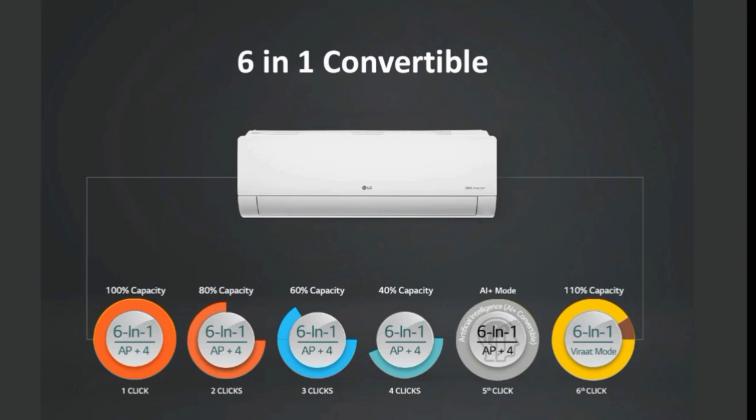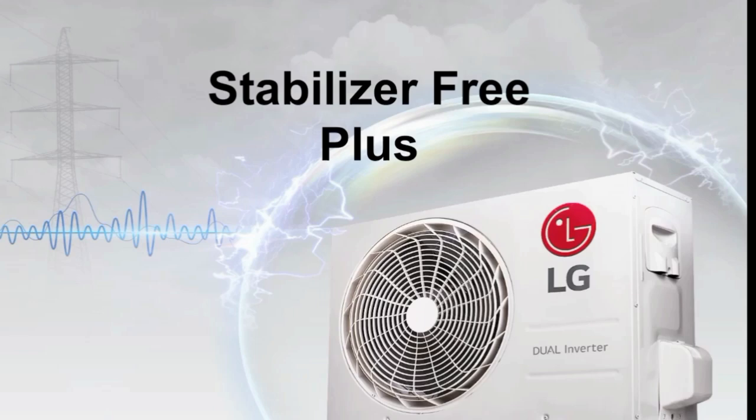If you press VRAT mode, you will have high-key VRAT mode. If you press VRAT mode, you will get 6 extra cooling cycles and 110% AC mode. If you have a guest, it provides normal cooling. In VRAT mode, the AC runs at 110%, providing extra cooling.